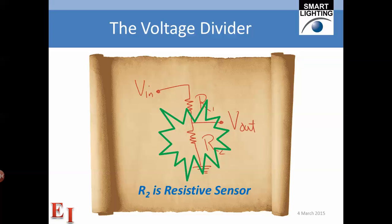Here we have the standard resistive voltage divider, but now we have a resistive sensor as the bottom resistor in the divider. If we measure the output voltage and know the input voltage and R1, a calibration curve allows us to determine light level, force, strain, or whatever physical quantity the sensor measures.